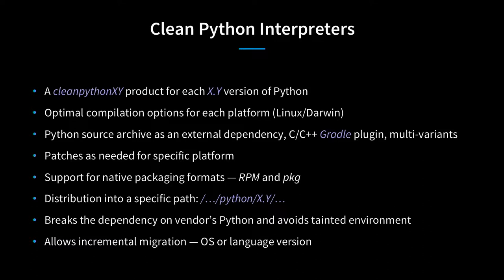So let's look at the Python interpreters. We decided to create separate products for each version of Python x.y—say 3.5. We build a product called Clean Python 3.5. That product is a pure C/C++ compilation thing that takes standard Python from python.org as an input tarball, uses a Gradle plugin for C/C++ to compile it, and produces an artifact that's a deployable Python version. Because we use multiple platforms, we have multivariant builds—a matrix build—producing artifacts for Red Hat 6, Red Hat 7, Darwin, whatever is needed.